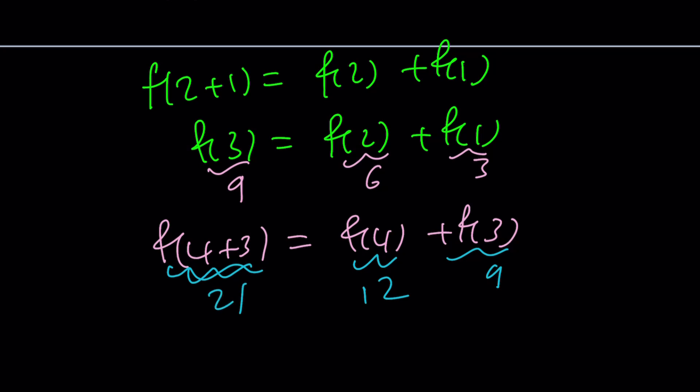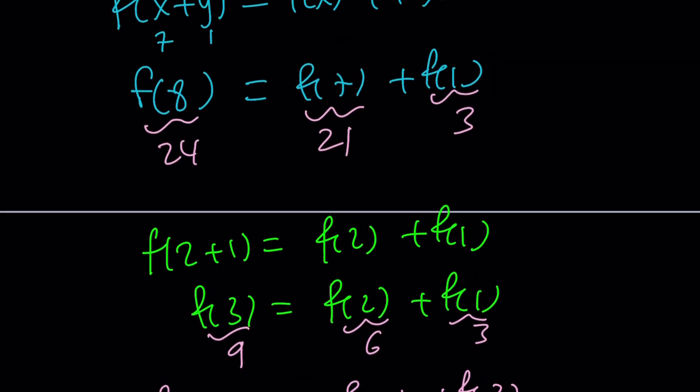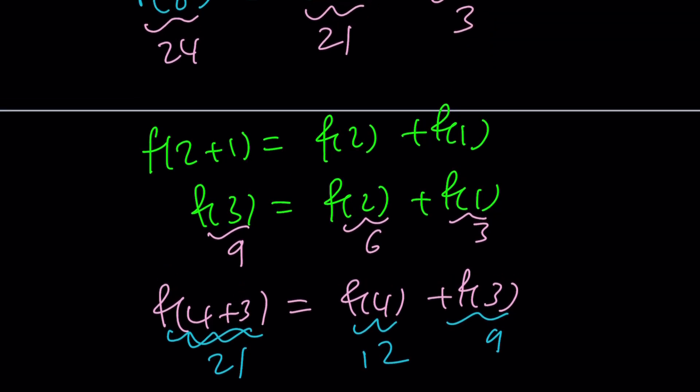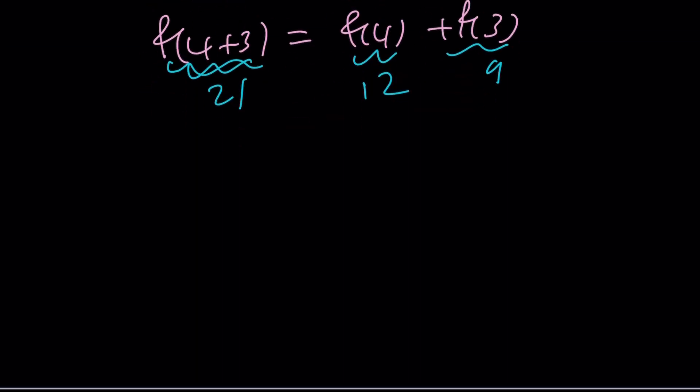Wow. We got the same answer. Is that a surprise? No. It's supposed to be constant, right? f of 7 is always the same for this function. Now, what is going on here? Let's write down some inputs and outputs. f of 1 is 3, f of 3 is 9, f of 7 is 21.